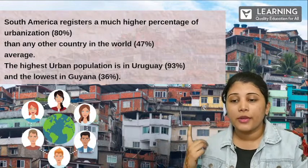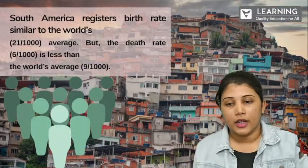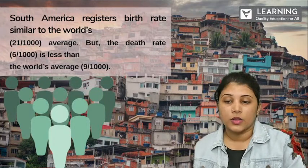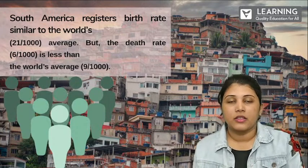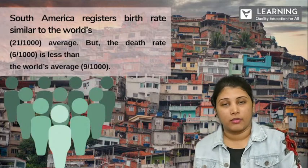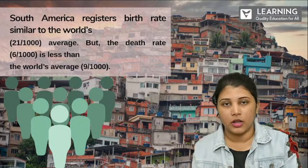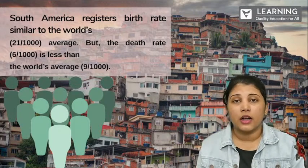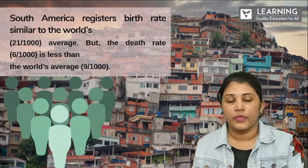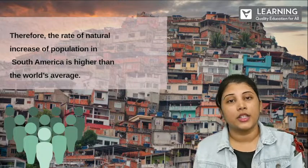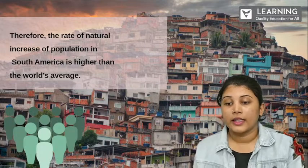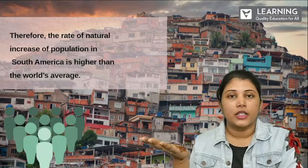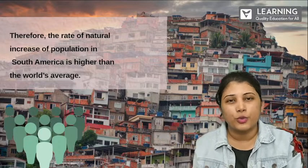South America registers a birth rate similar to the world average of 21 per 1000, but the death rate of 6 per 1000 is less than the world average. This means birth rates are really high but the death rate has become low. Therefore, the rate of natural increase of population in South America is higher than the world's average, with birth rates increased, death rates decreased, and population increased.